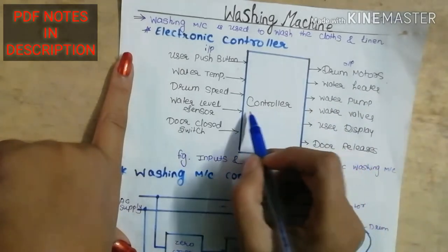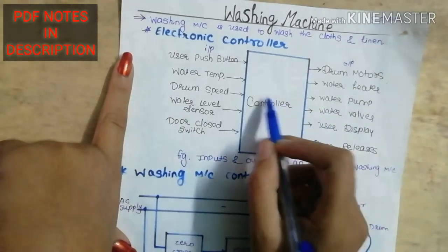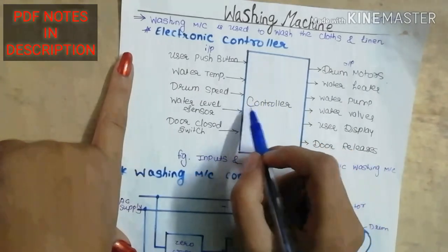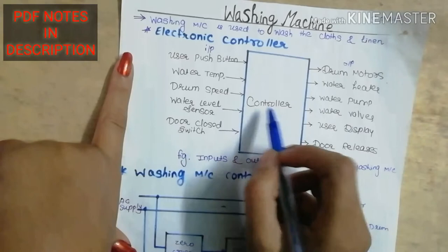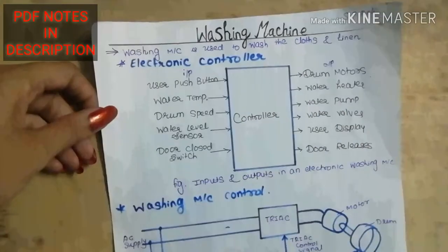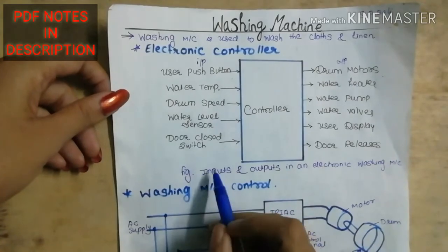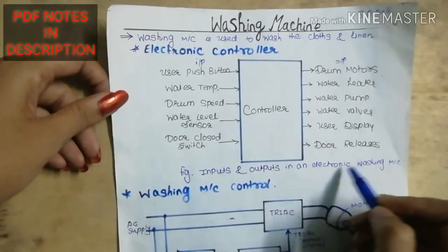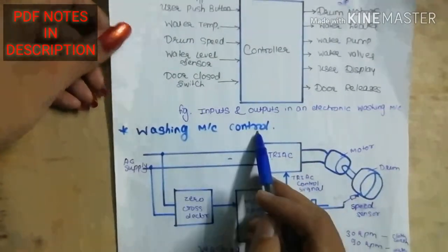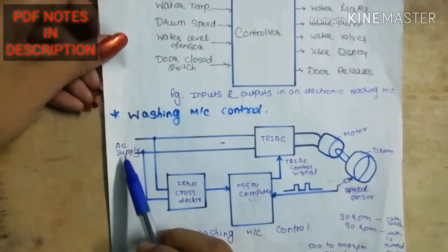We will check out these two things, so if we switch to input and output, we will use the controller to control the input and output. This is our diagram. Input and output in an electronic washing machine. Now we will see washing machine control.